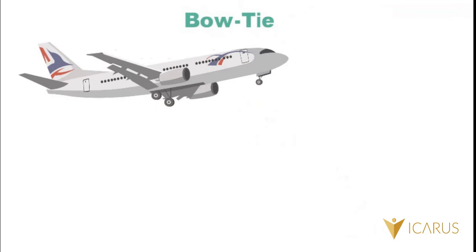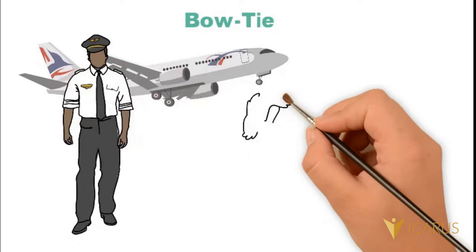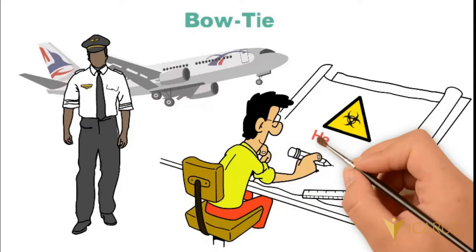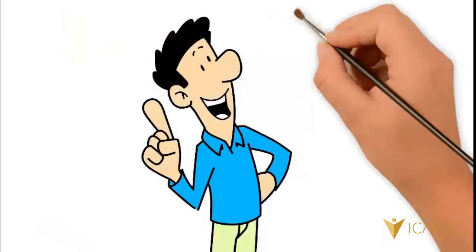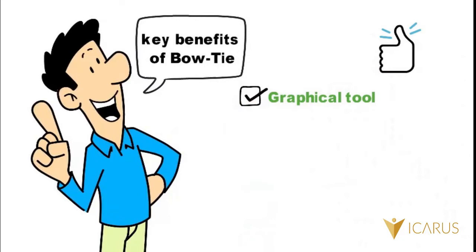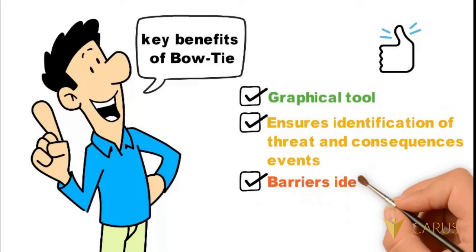Bowtie is one of the most effective and popular risk analysis tools in aviation. The concept is very simple, imitating a bowtie shape in order to build a diagram of your hazard to get the full picture of what is happening in your environment. The key benefits of bowtie: it is a graphical tool which is simple to read and understand, ensures identification of threat and consequence events, and barriers are identified and evaluated.